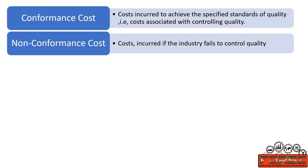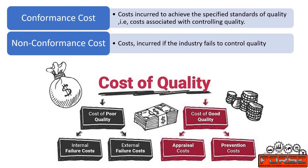Conformance costs are those which are incurred to achieve the specified standards of quality, that is, costs associated with controlling quality. Whereas non-conformance costs are those costs which are incurred if the industry fails to control quality. Conformance or cost of good quality can be further divided into prevention costs and appraisal costs. Similarly, non-conformance costs or cost of bad quality can be further divided into internal failure costs and external failure costs.